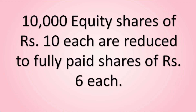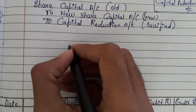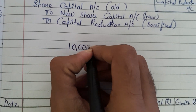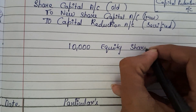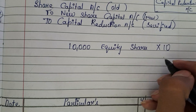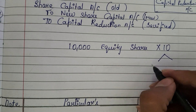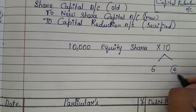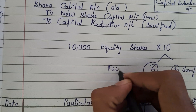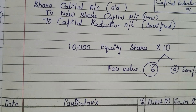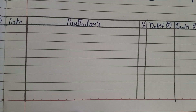Let us see the question: 10,000 equity shares of Rs.10 each are reduced to fully paid shares of Rs.6 each. So the company has 10,000 equity shares. Each share value was Rs.10 but it is being reduced to Rs.6, and Rs.4 they are sacrificing. The face value is being reduced to Rs.6. Let us see how to pass the journal entry for this.